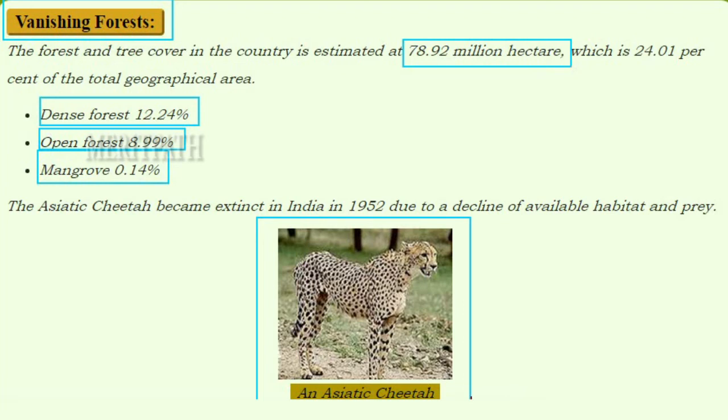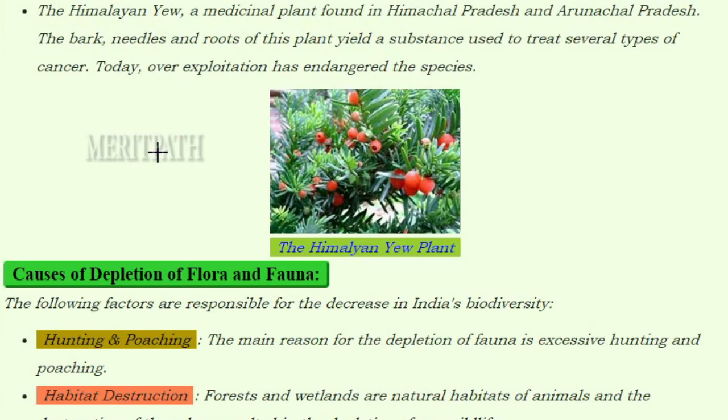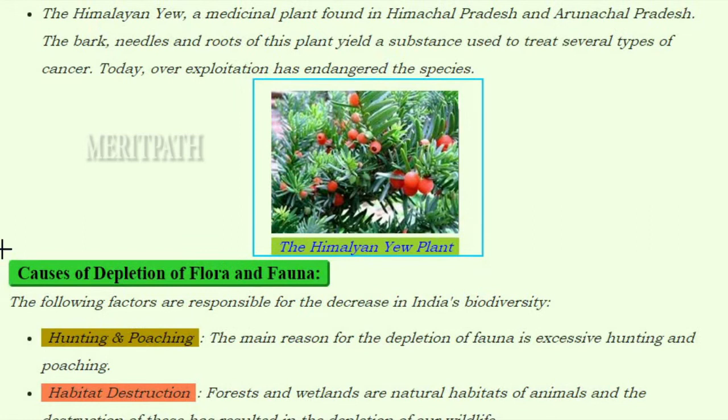The Asiatic cheetah became extinct in India in 1952 due to a decline in available habitat and prey. The Himalayan yew is a medicinal plant found in Himachal Pradesh and Arunachal Pradesh; its bark, needles, and roots yield substances used to treat several types of cancers. Today, over-exploitation has endangered this species.